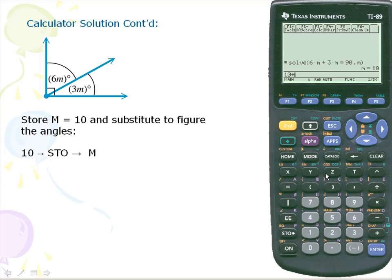We're going to store that for m. We'll hit enter to lock that in. So it's now storing 10 for m. So to find out our first angle measure we'll hit 6m which gives us 60.